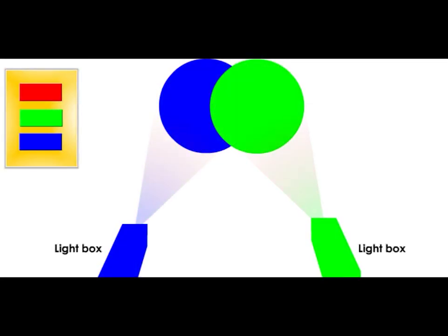What colour is formed when blue and green light mixed together? The answer is cyan.